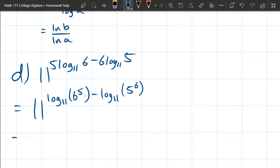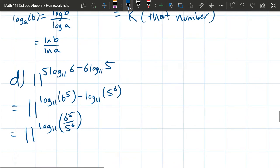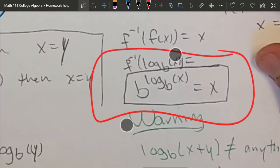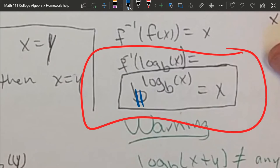Now we're subtracting two logs, and this is the same as dividing on the inside. So our numerator is 6⁵, denominator is 5⁶. And now finally we can use the cancellation property on the right side of this, and the only difference is our base is 11 now. So those are going to cancel out and it's going to just leave us with the input.